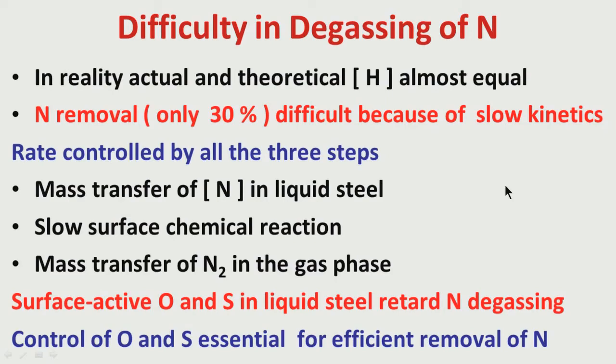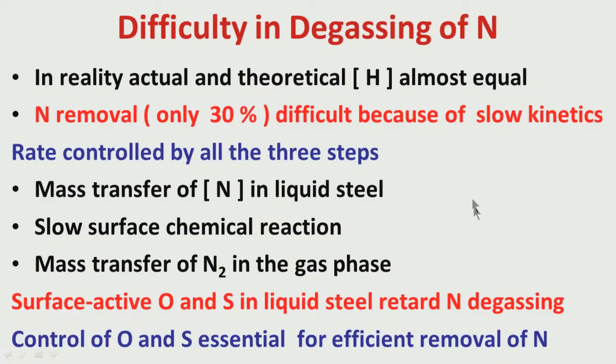That is the reason there is a sequence of processes for secondary refining. First there is deoxidation, then only you will get good desulphurization. As explained earlier, if you have a low amount of dissolved oxygen in liquid steel, then only is it possible to transfer sulphur - that is, transfer of sulphur from liquid steel to slag will be faster when soluble oxygen in liquid steel is low. When good deoxidation is achieved, then good desulphurization follows. When both are complete and we have very low oxygen and sulphur in liquid steel, then only should we go for degassing, and then we can get relatively better nitrogen degassing.